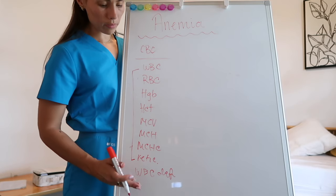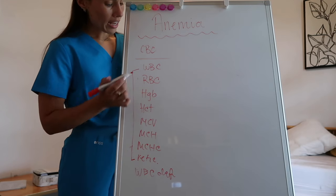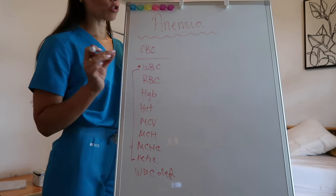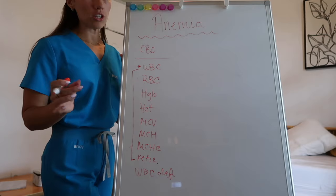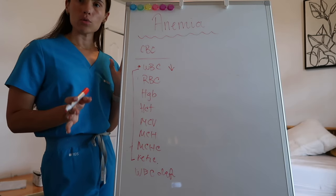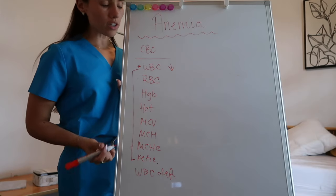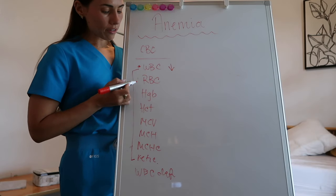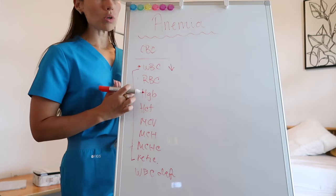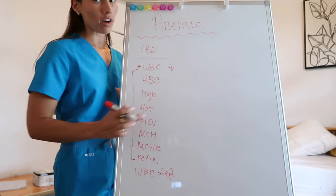Your white blood cell count differential is not going to mean that much to you for anemias. The only time your white blood cell count should trigger something is when it's low. A lot of times with autoimmune disorders — lupus, rheumatoid arthritis — we will see a low white blood cell count. And if you see that coupled with these numbers being off as well, that's when I would immediately go to anemia of chronic diseases.